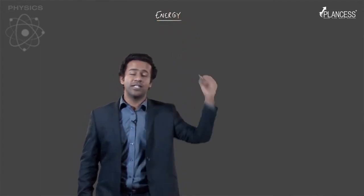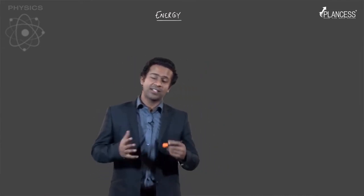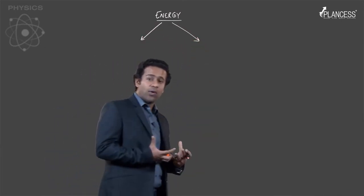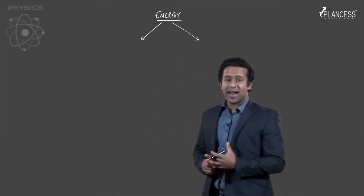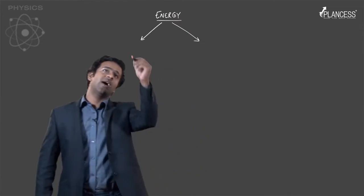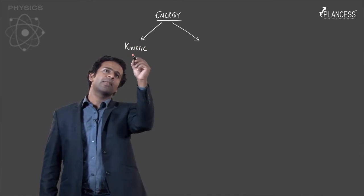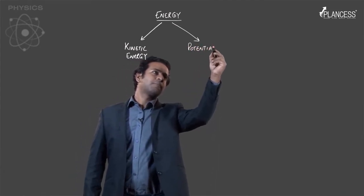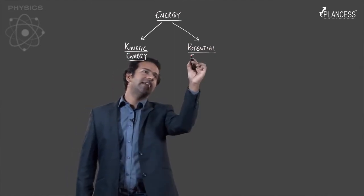Something that has more energy can potentially do more work. There are various forms of energy — heat is a form of energy, light is a form of energy, electric current is a form of energy, and there are many other forms. But we will first look at a classification of energy based on how or why that energy is contained. There are two basic categories: kinetic energy and potential energy, and these names are very suggestive of their meaning.